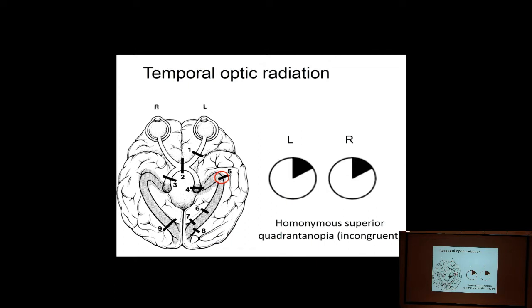From the lateral geniculate, the optic radiations fan out over a huge distribution in the temporal and parietal lobes. The fibers going through the temporal lobe form Meyer's loop. A lesion there tends to cause less than a full quadrant — a slice of pie — a superior quadrant anopsia, but not complete. So if you see that, the lesion has to be in the opposite temporal lobe. Notice how the visual field defect is perfectly symmetrical in each eye once we're behind the chiasm.